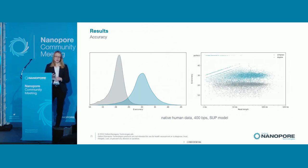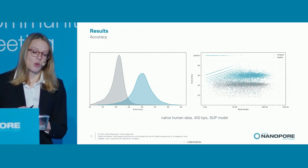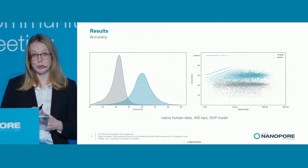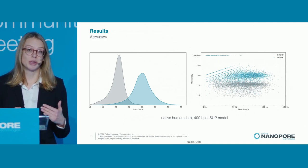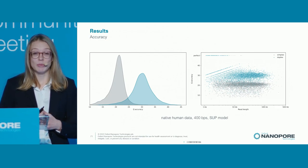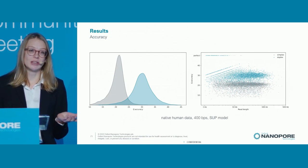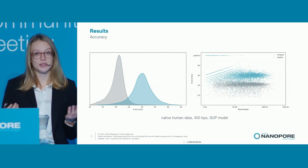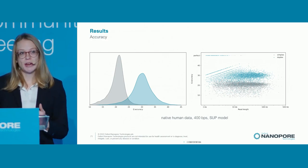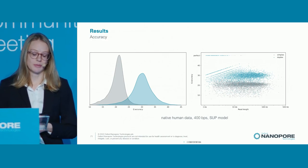This is a different flow cell under similar conditions, again showing duplex reads in blue compared to their simplex equivalents in gray. We see that this 10 Q-point improvement holds all the way up to hundreds of kilobases — so there's no tradeoff here of accuracy for read length.